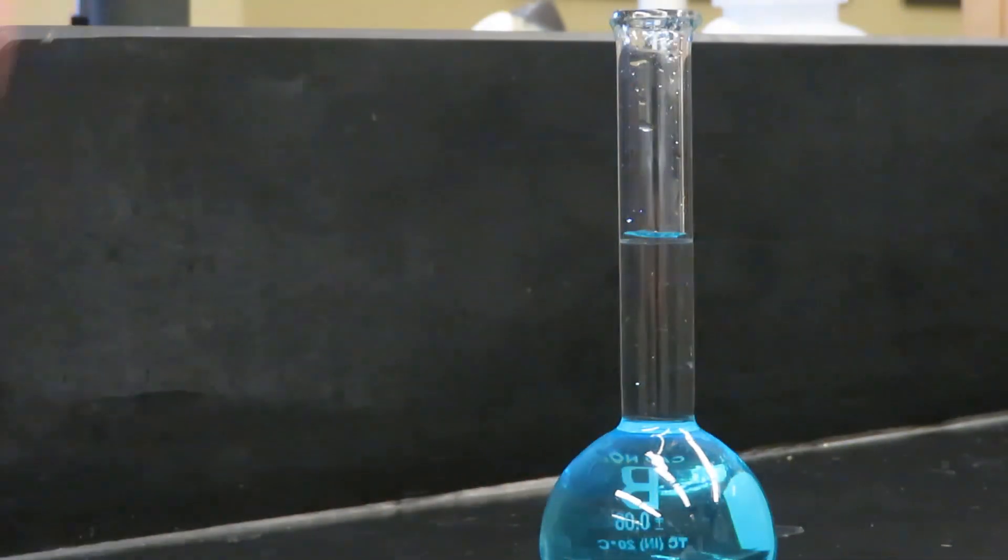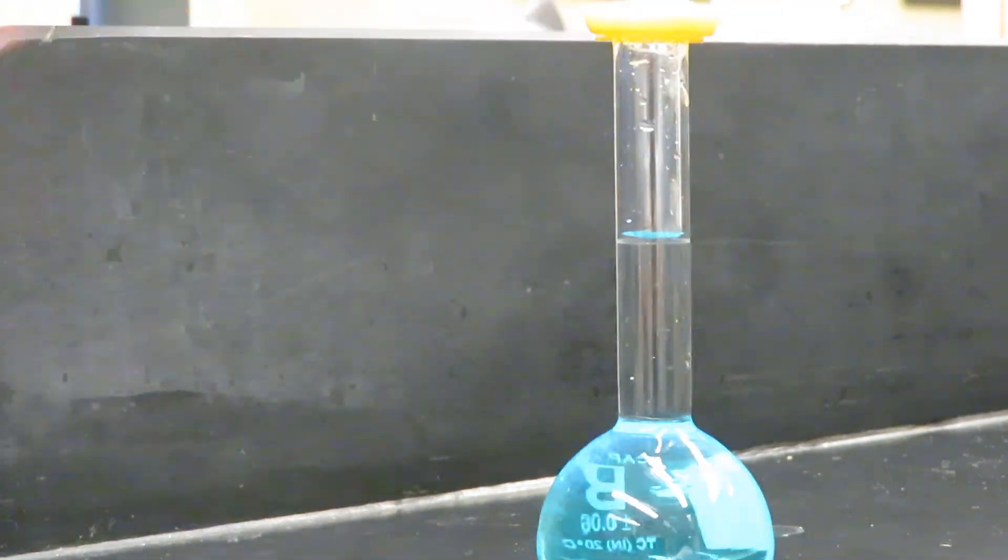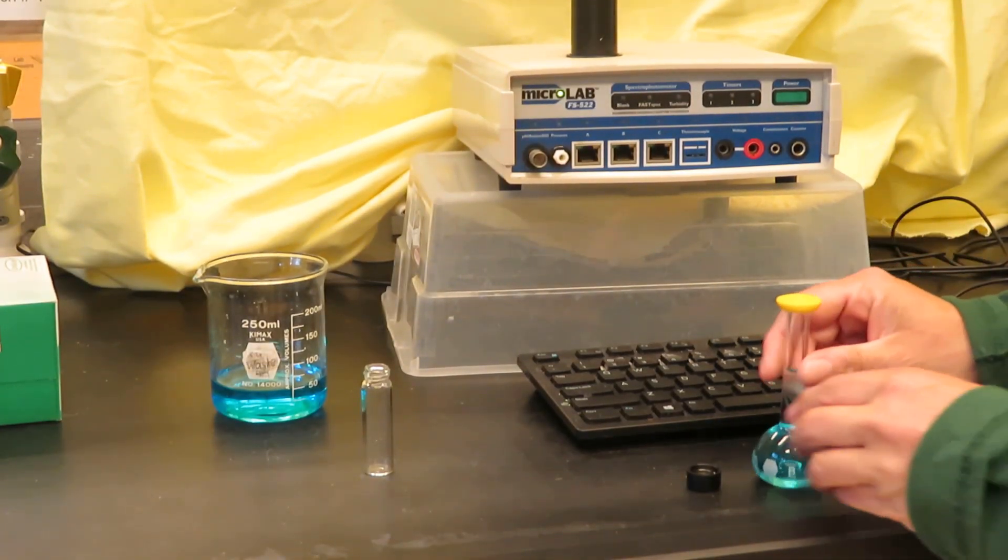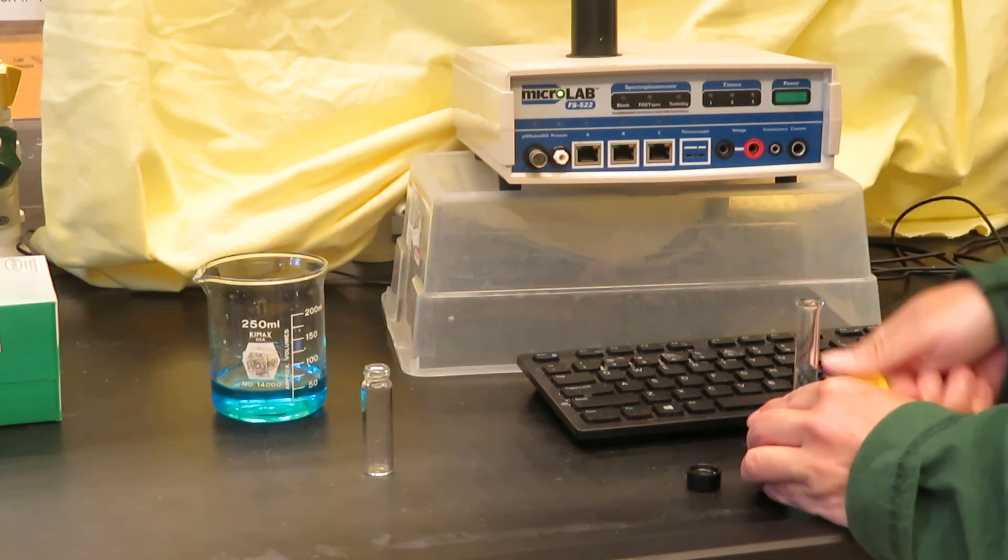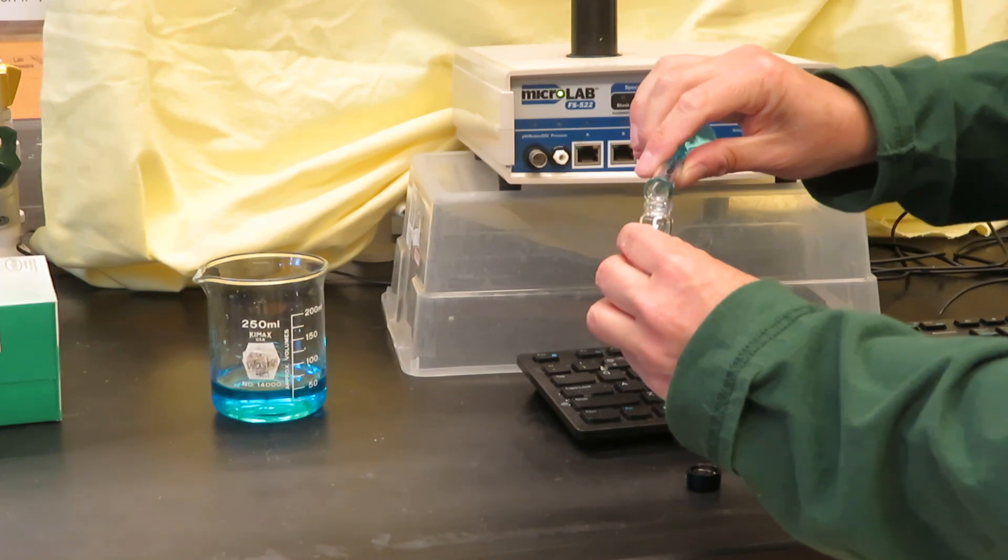Now I can finish mixing and we'll be ready to measure the concentration. We have our unknown solution that we made from Part B from a solid. We want to transfer it to the vial to measure the concentration of the unknown that we made.